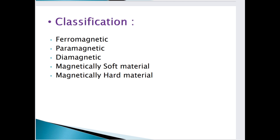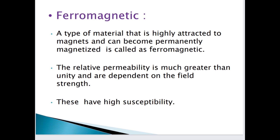The classification of magnetic material includes: ferromagnetic material, paramagnetic material, diamagnetic material, magnetically soft material, and magnetically hard material. We will understand what ferromagnetic, paramagnetic, and diamagnetic mean. If you are also doing a competitive exam, this is very important for that as well.